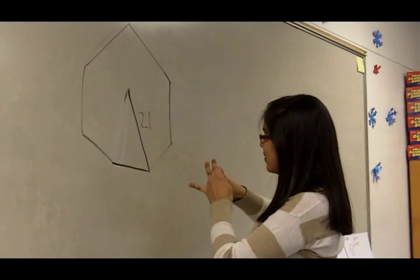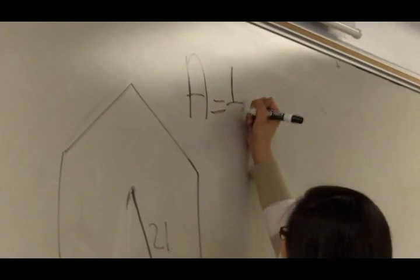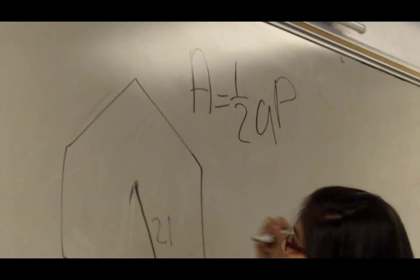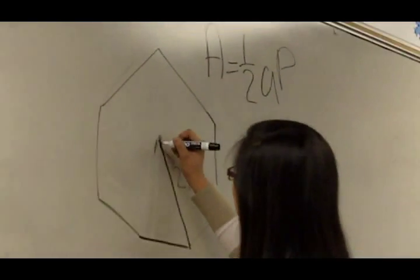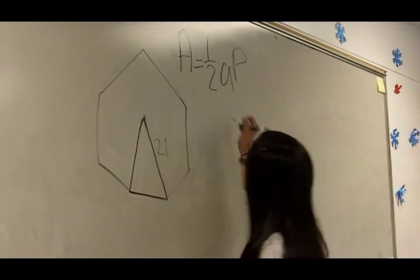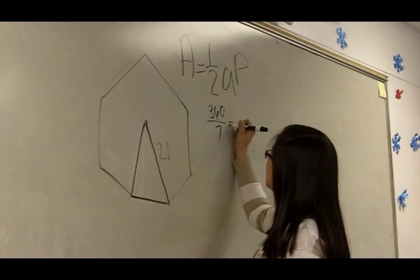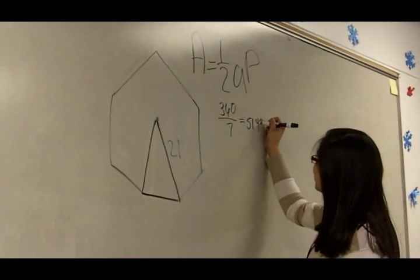You need the formula A, which is area equals one-half apothem times perimeter. You are given only the radius, so you have to find the central angle of this triangle, and it is 360 divided by 7, which gives you 51.43.